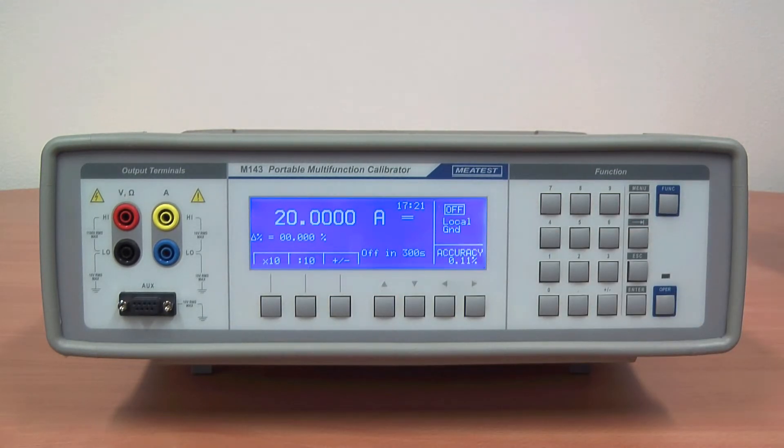Portable simulator obviously can't generate 20A all day long, so when you select value higher than 10A, a small timer with maximum output time will appear. Still, the M143 can generate up to 10A continuously and time limit at 20A is full 5 minutes.